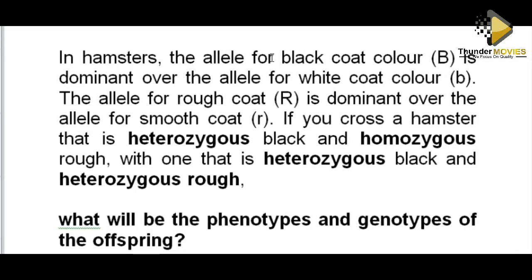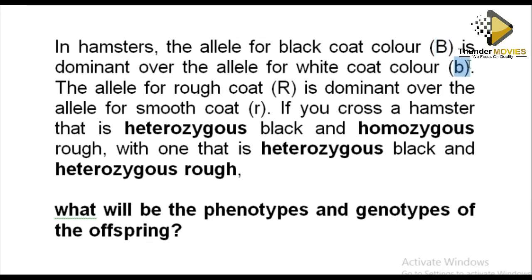Let's look at an example involved in a dihybrid cross. In hamsters, the allele for black coat color — capital B — is dominant over the white color, which is indicated as small b. The allele for roughness — capital R — is dominant over the allele for smoothness. So rough is dominant over smooth.